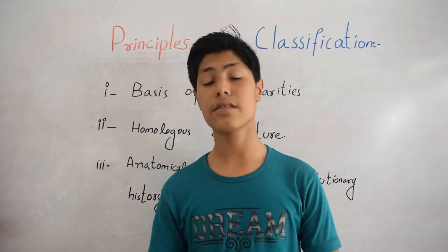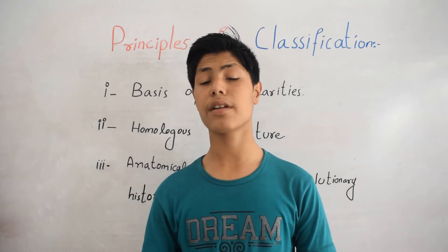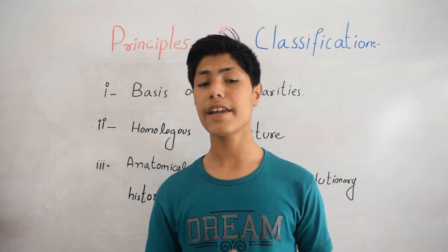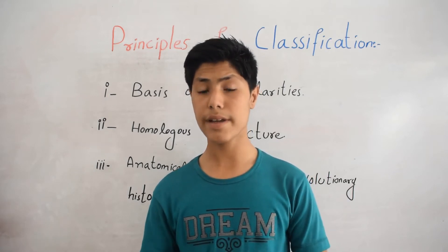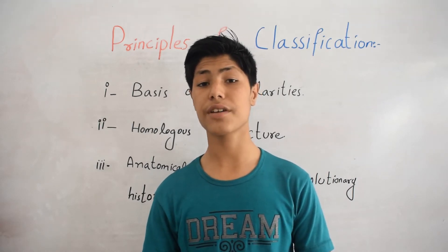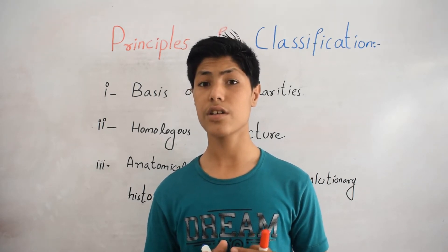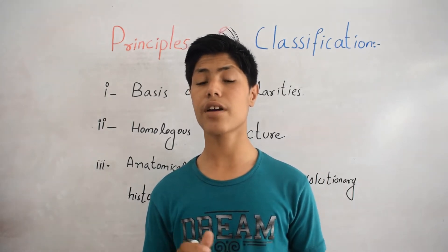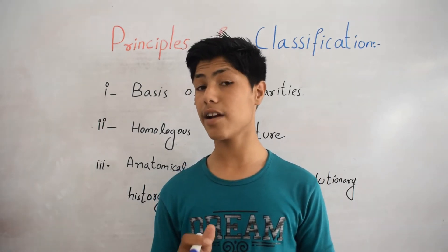Let's talk about principles of classification. But before discussing principles of classification, let's know about biological classification. The arrangement of organisms into groups and subgroups on the basis of similarities and differences is called biological classification. If organisms are similar to each other, they are classified into one group. If organisms are different from each other, they are classified into a different group.